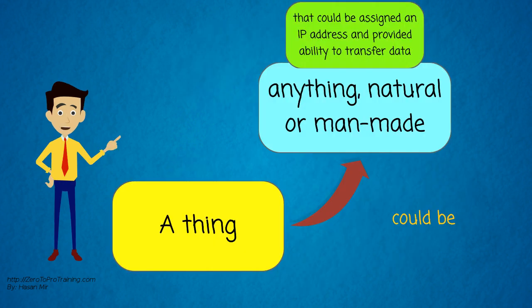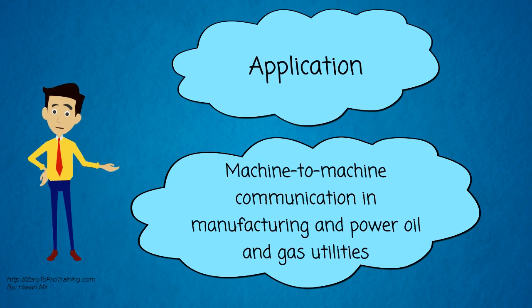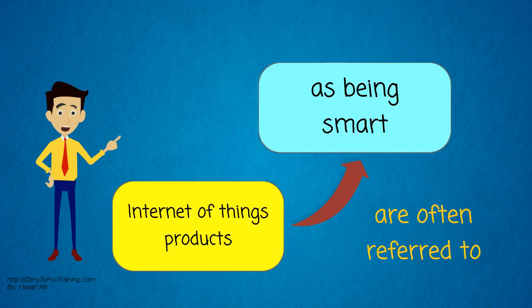Or anything that is either natural or man-made that could be assigned an IP address and provided with the ability to transfer data over a network. Today, the most common application of Internet of Things is in the shape of machine-to-machine communication in manufacturing and power, oil and gas utilities. Such products are often referred to as being smart.